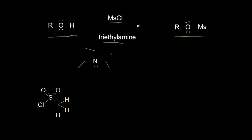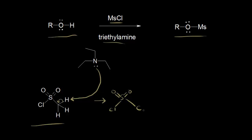First, the triethylamine is going to function as a base and take this proton right here. These electrons are going to remain behind on this carbon. Triethylamine reacts with mesyl chloride right here. If we take a proton off, we would have our sulfur double bonded to this oxygen and double bonded to another oxygen, the chlorine right here, and we would now have a carbon bonded to only two hydrogens and a lone pair of electrons on this carbon — so it's a carbanion with a negative one formal charge. These electrons in this bond were left behind on the carbon to form our carbanion.